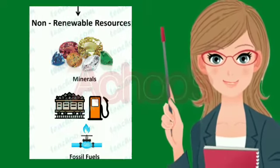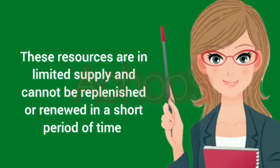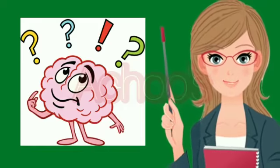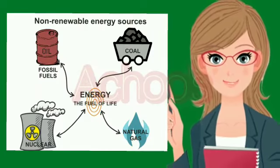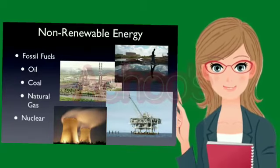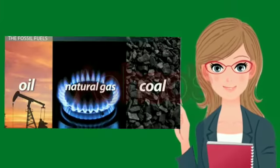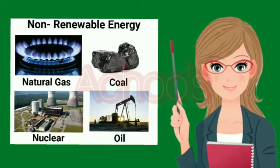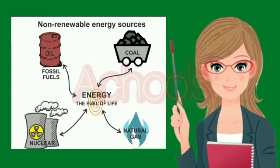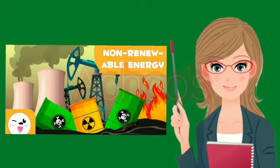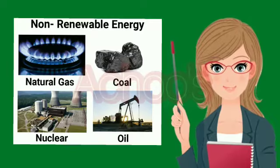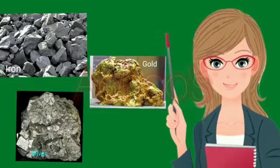Non-renewable resources are limited in supply and cannot be renewed in a short period of time. This is because they are formed over a very long period of time. For example, fossil fuels like coal, petroleum and natural gas took almost thousands of years to form. Since there is a limited stock, we have to use them smartly. If we overuse them and they run out, they are completely exhausted and it takes thousands of years to form again. Other examples of non-renewable resources are iron, gold and silver — they can be recycled but cannot be regenerated.